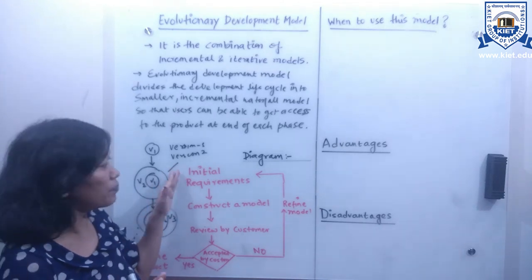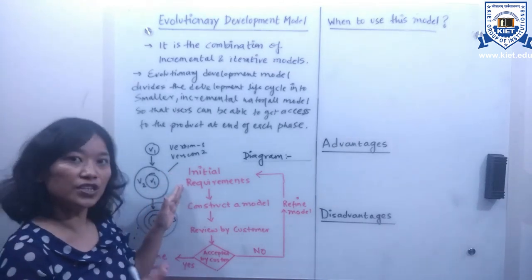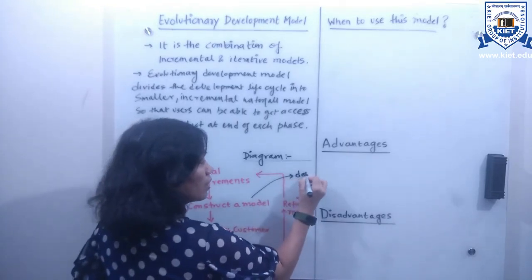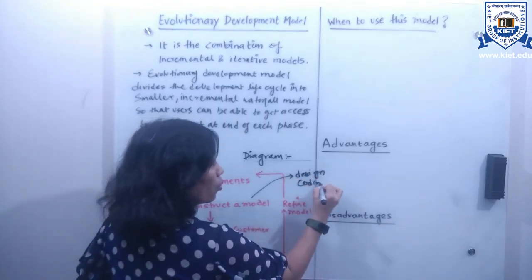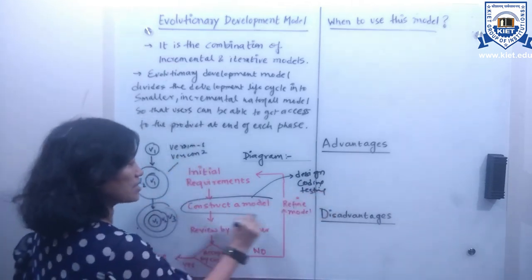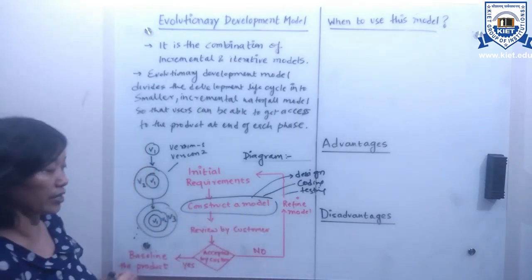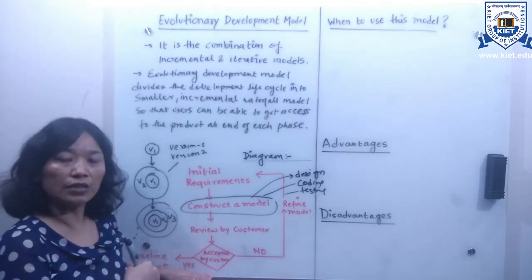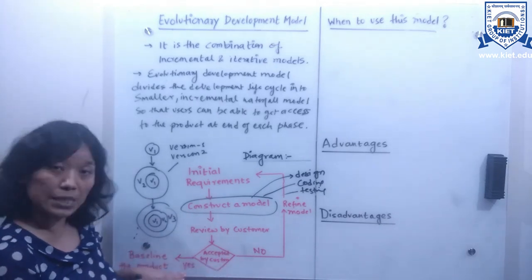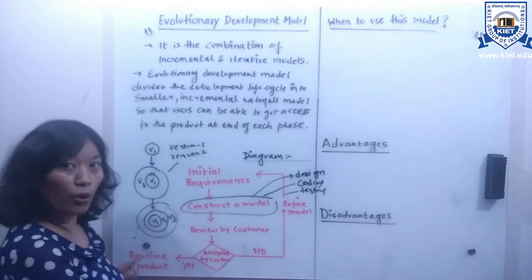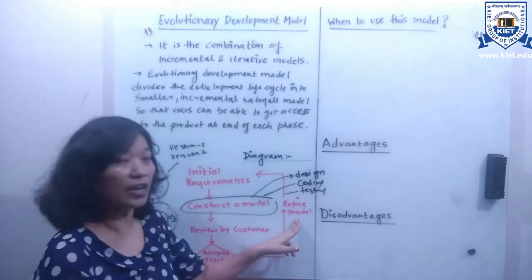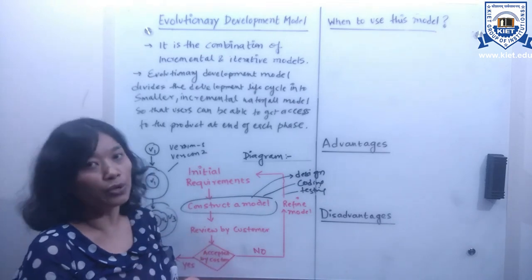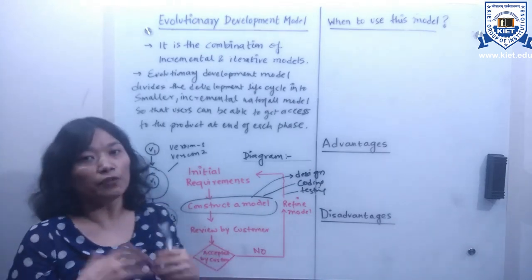The diagrammatic representation shows that the evolutionary development model starts with some initial requirements. On the basis of those initial requirements, it constructs a model that has design, coding, and testing phases. Then it goes to review by the customers. We check whether the customer accepted it or not. If accepted, we baseline the product. If not accepted, we refine the model by accommodating the customer's feedback as new requirements.